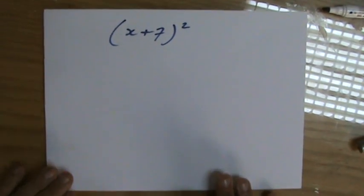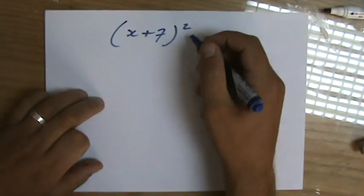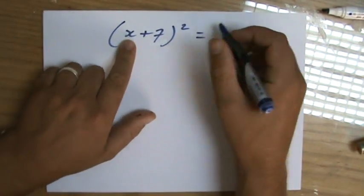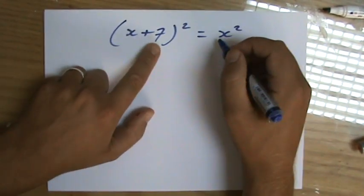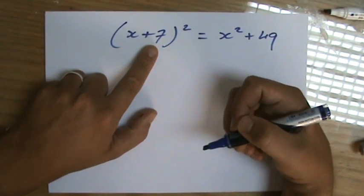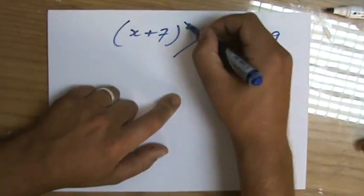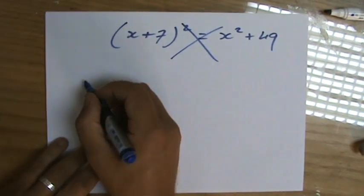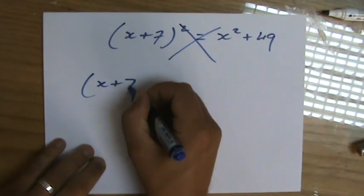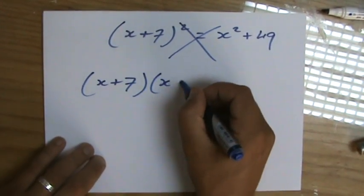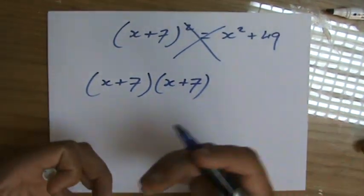(x plus 7) squared. Because a lot of students make a mistake here, because they're going to say x plus 7 squared is x squared plus 49, right? Well, that is absolutely wrong, because x plus 7 squared means x plus 7 times itself, so times x plus 7.